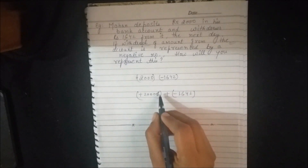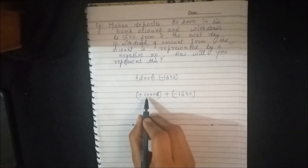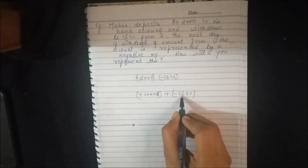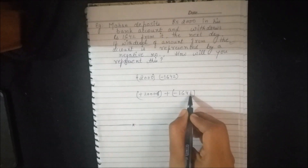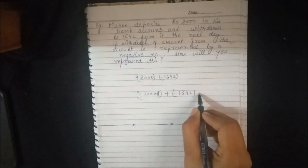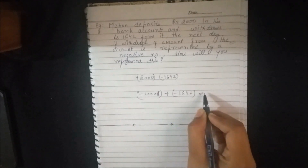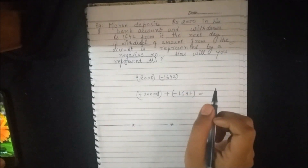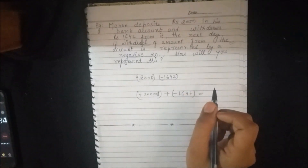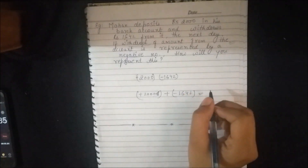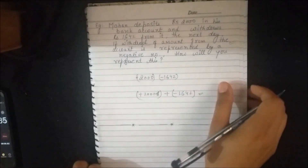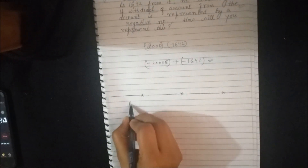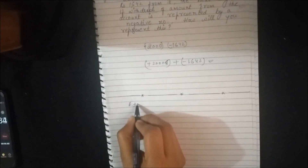This will be represented as positive 2000 and negative 1642 rupees. This is your representation of the above question. Now we will be seeing what an additive inverse is.